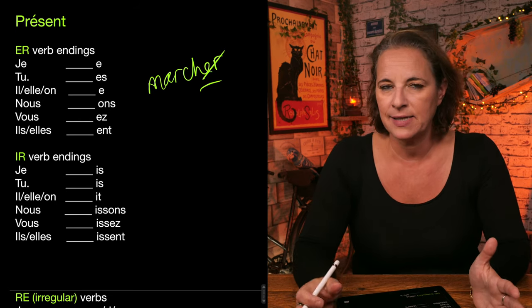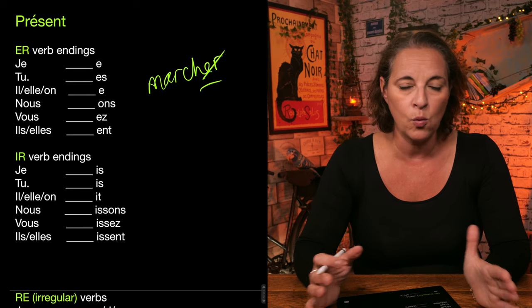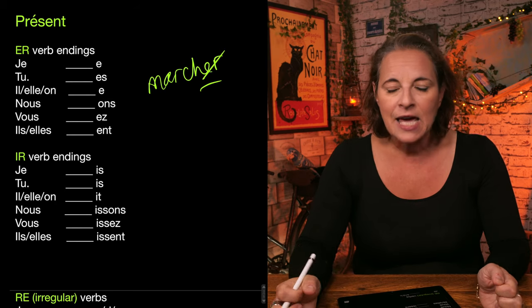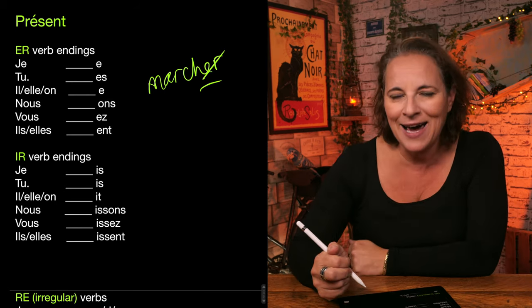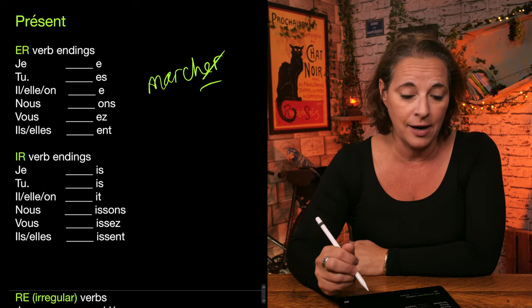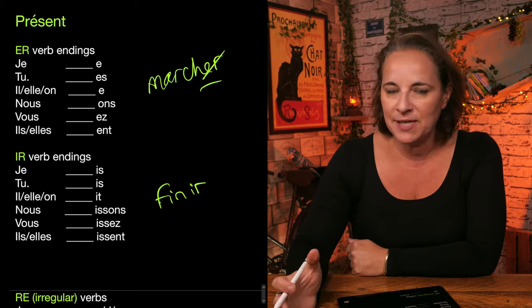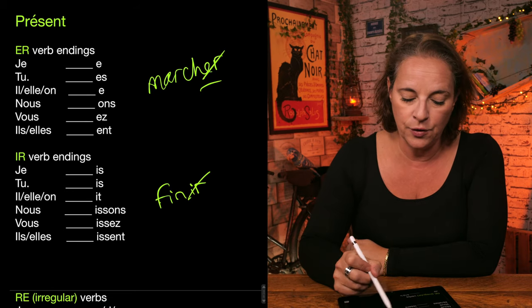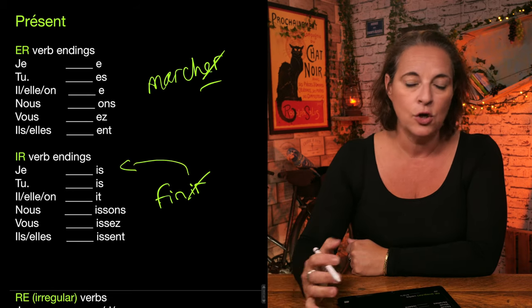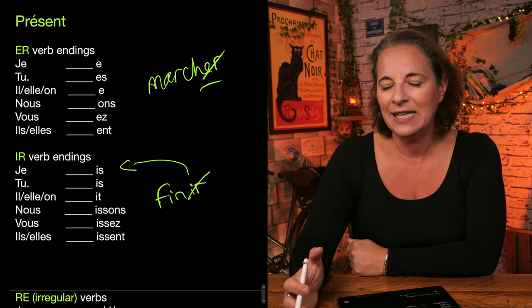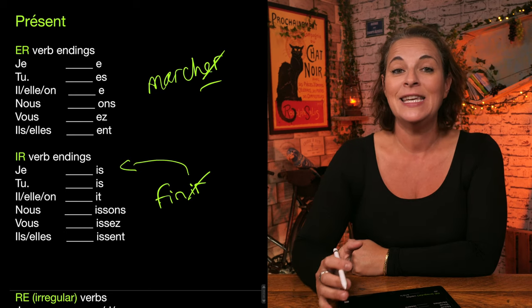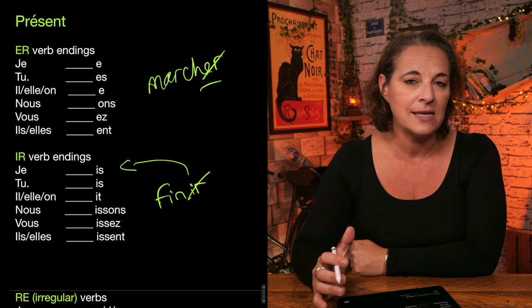So I walk, you walk, he walks and so on. If we wanted to use an IR verb as in regular IR verbs such as finir, the concept is the same and you add those special endings. Je finis, tu finis, il finit, nous finissons, vous finissez, ils finissent, elles finissent.